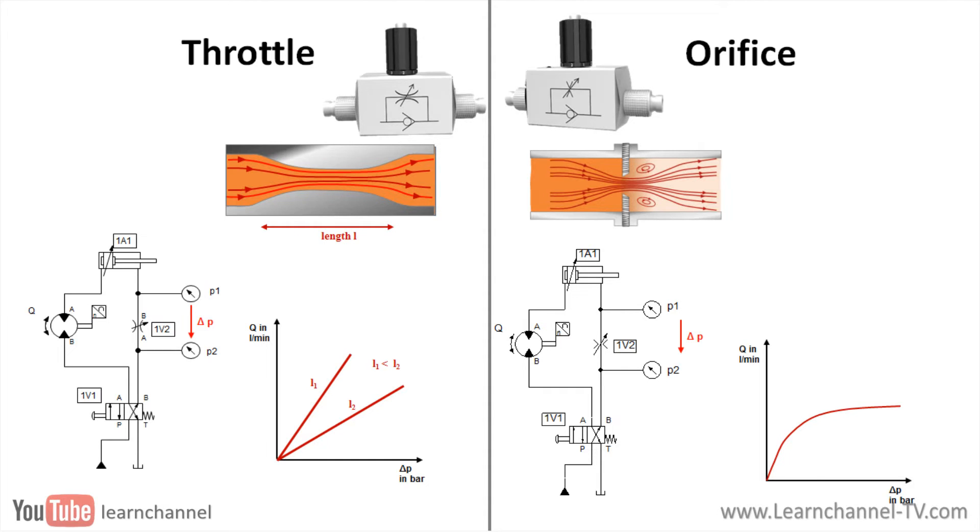Regarding the orifice, the viscous fluid friction is very low, and thus the flow rate hardly depends on the viscosity of the oil. This is an advantage. On the other hand, you see a big amount of swirls, especially at the exit point of the orifice.